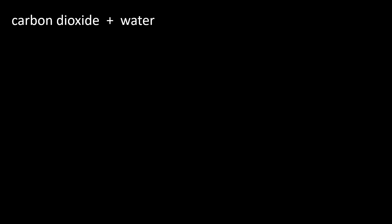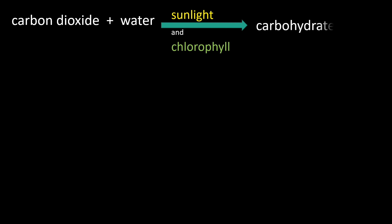Carbon dioxide is used by plants during photosynthesis. Carbon dioxide and water are the raw materials. In the presence of sunlight and chlorophyll, green plants produce carbohydrates using carbon dioxide and water. The process needs sunlight and chlorophyll.